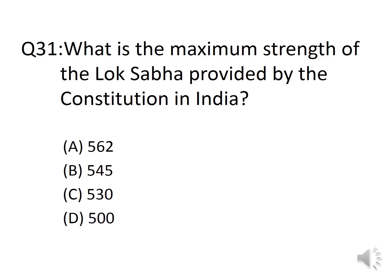Question 31: What is the maximum strength of the Lok Sabha provided by the Constitution of India? Options: A. 562, B. 545, C. 530, D. 500. 530 members are elected from the states, 13 members are elected from the Union Territories, and 2 members are nominated from the Anglo-Indian community.